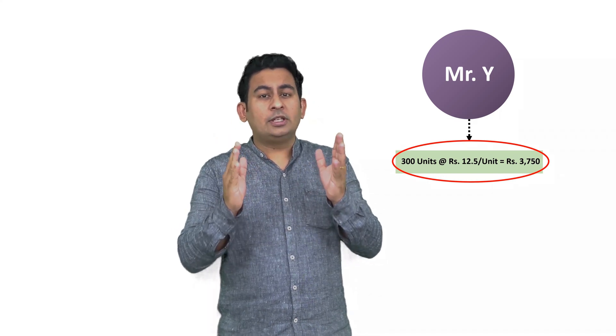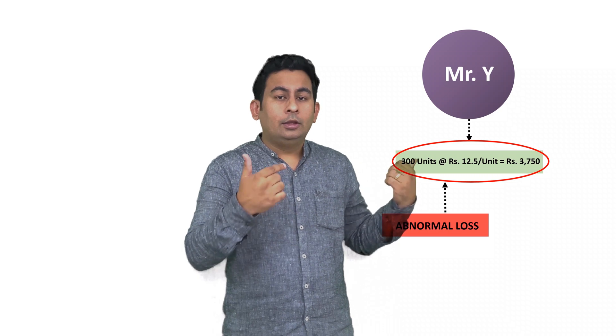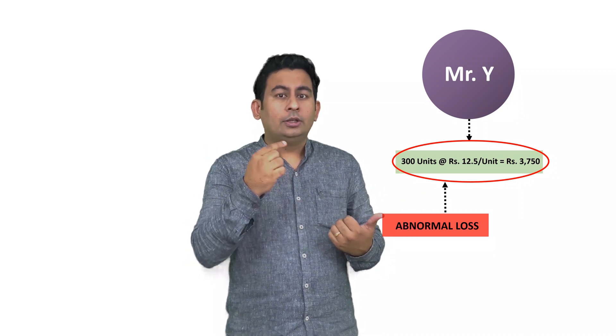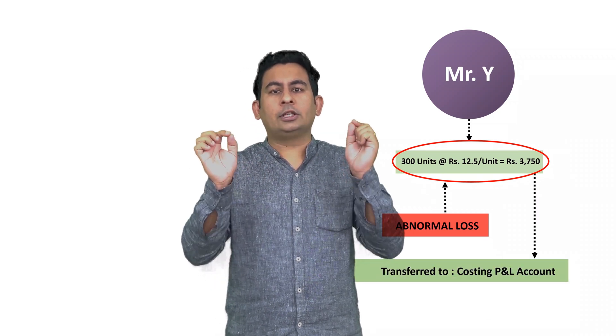The remaining 300 units for Mr. Y is abnormal loss. So 300 units at the rate of 12.5 per unit gives a total of 3,750 rupees as the abnormal loss for Mr. Y. As we learned, this loss has to be borne by the manufacturer, so this 3,750 will be transferred to the costing profit and loss account.